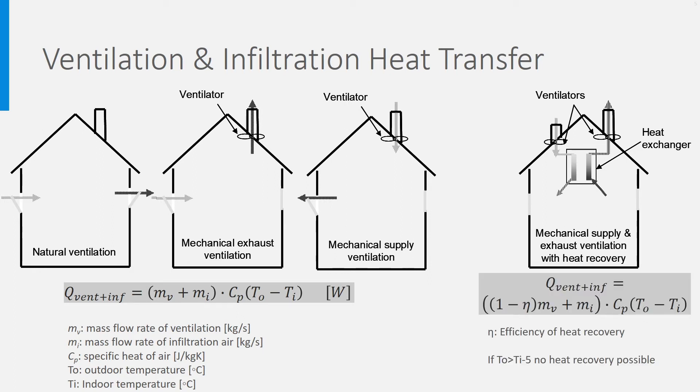You see that there is an efficiency term, eta, coming up. This eta is the efficiency of the heat recovery process. Generally, this lies between 0.6, which is very poor, and 0.9. This heat recovery only works if the temperature difference between indoor and outdoor air is higher than 2 to 5 degrees Celsius. In very good systems, you see nowadays that the difference is around 2 degrees Celsius.